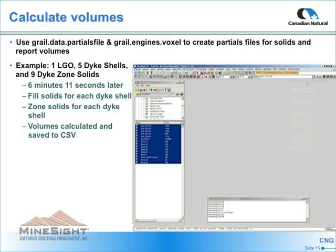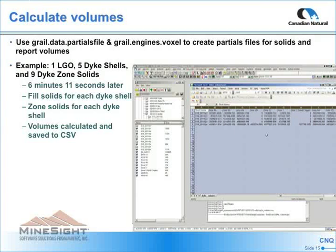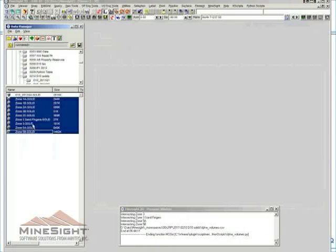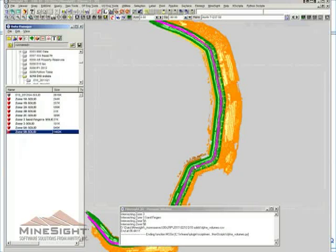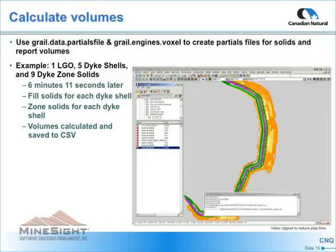Here's another example of how to automate repetitive work. This time I'm using an LGO exported to a geometry object and the dike target shells of various material zones. The script creates a total fill solid between the LGO surface and the dike's target, and intersects that solid against all the zone materials. Once the intersected zone solid is created, it creates partials and calculates the volume from the partials file. The results are saved to a CSV, then it continues looping through the remaining dike target shells. When complete, the script automatically opens the CSV with the volumes.